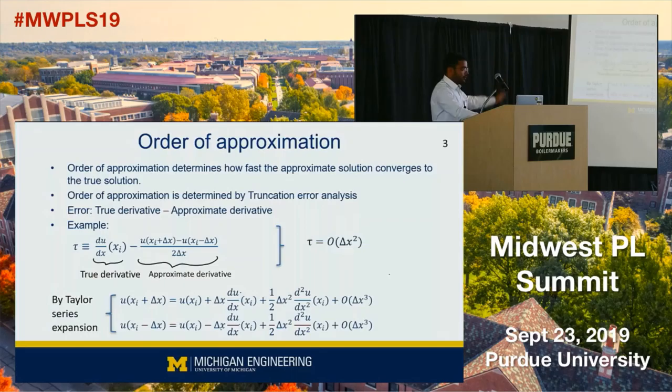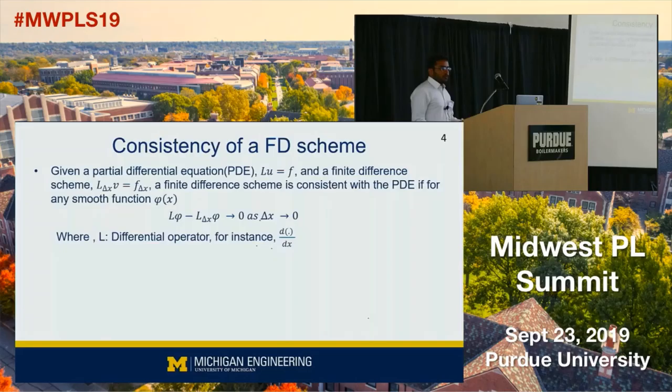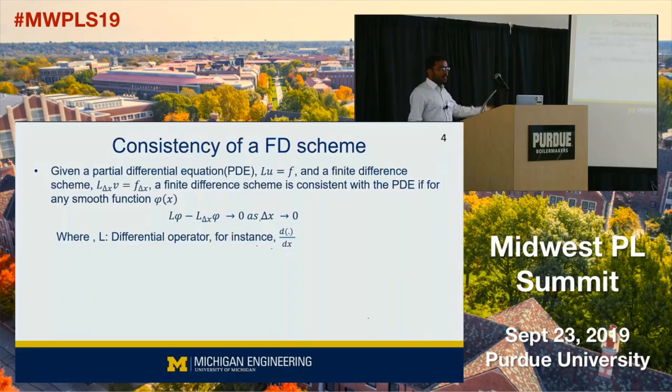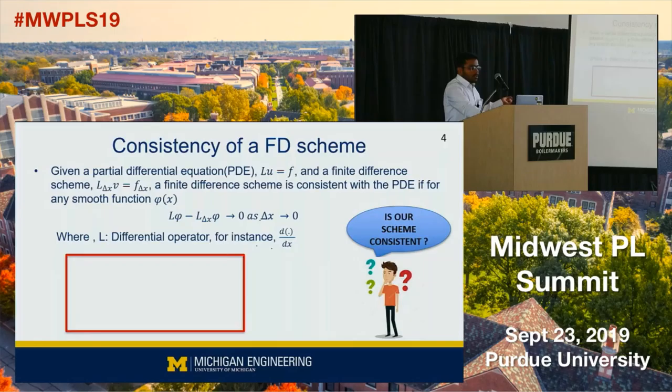Now we'll talk about the consistency property of this scheme. The consistency property basically says that if you are given a partial differential equation — let us say L equals f — and the finite difference scheme L_delta_x v equals f_delta_x, where L is your differential operator, for instance d/dx, then consistency says that for a continuous function, the true derivative L phi and the approximate derivative L_delta_x tend to 0 in the limit as delta x goes to 0. The error term is of order delta x squared, and if you take the limit delta x goes to 0, truncation error goes to 0. So indeed our scheme is consistent.